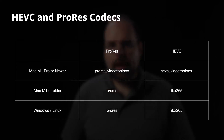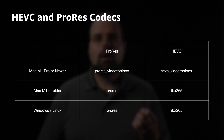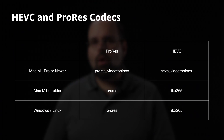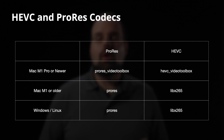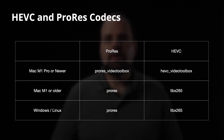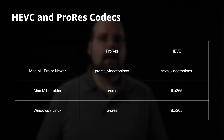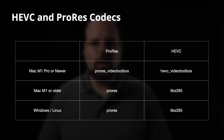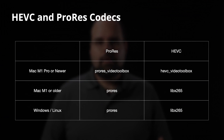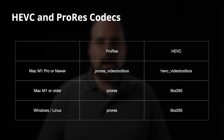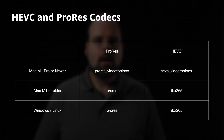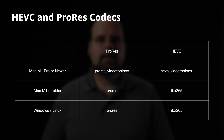If you're a Mac user and have an M1 Pro, Max, Ultra, or newer Apple CPU, then you can use the hardware HEVC and ProRes encoders. They're called in FFmpeg hevc_videotoolbox for the HEVC option and prores_videotoolbox for the ProRes option.